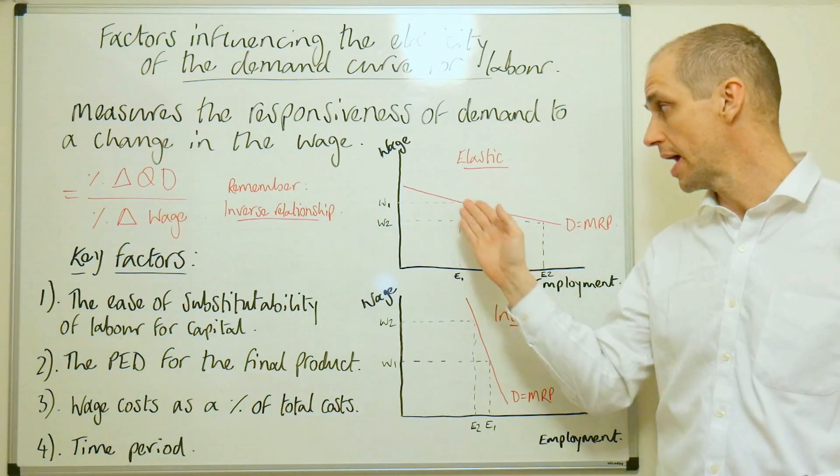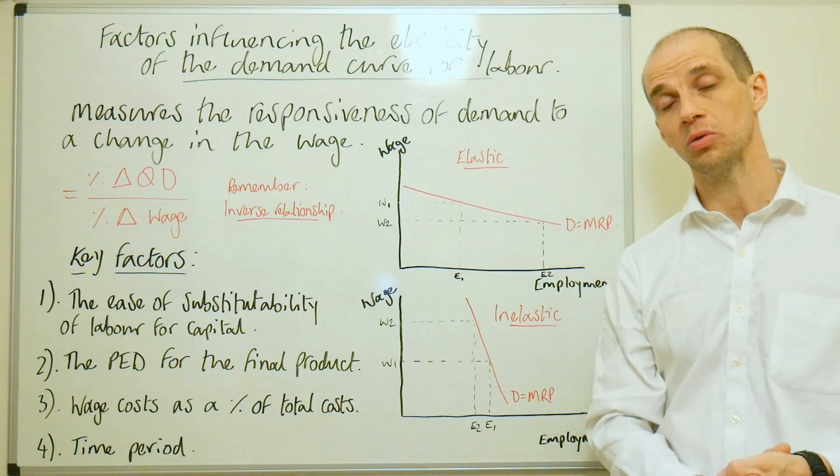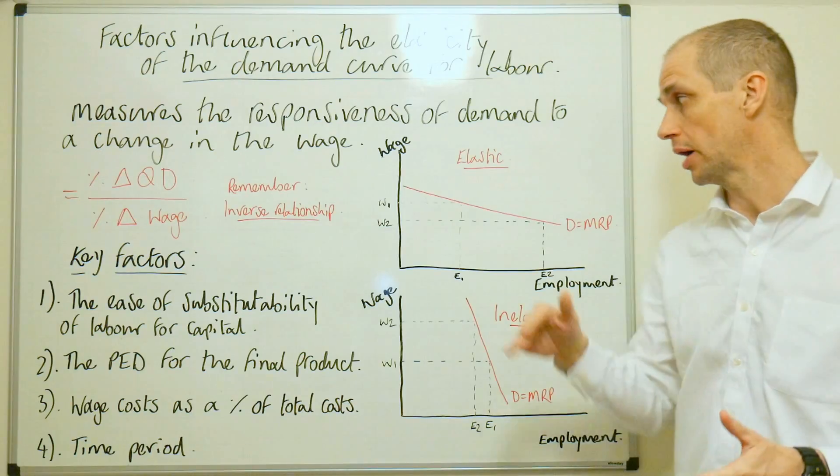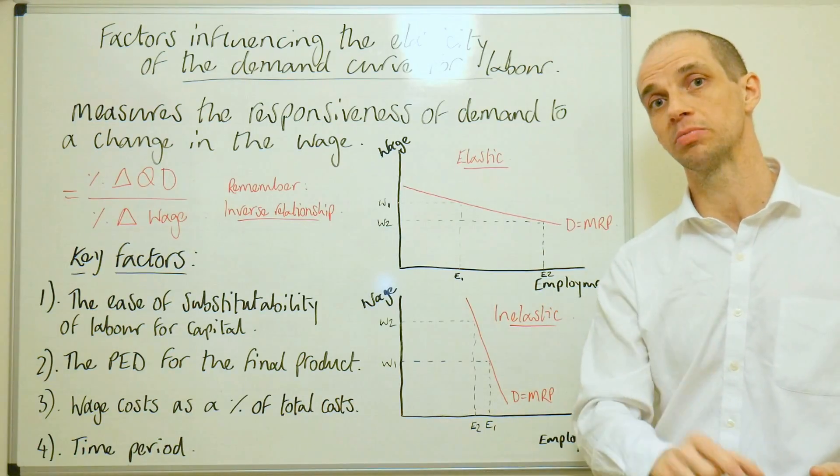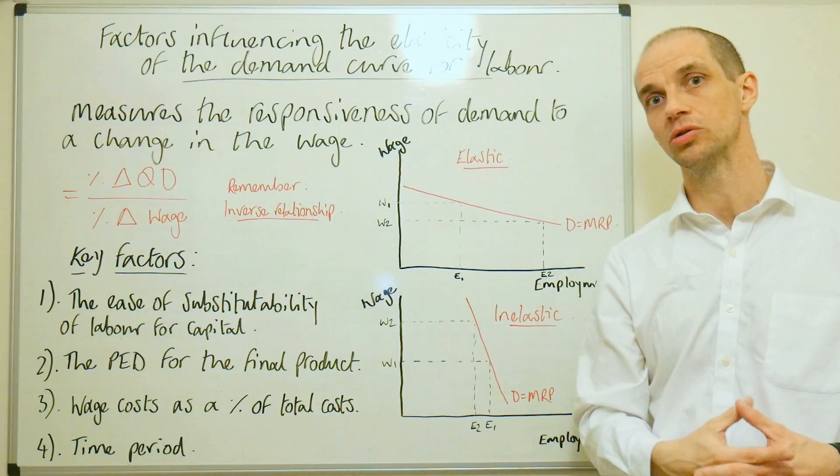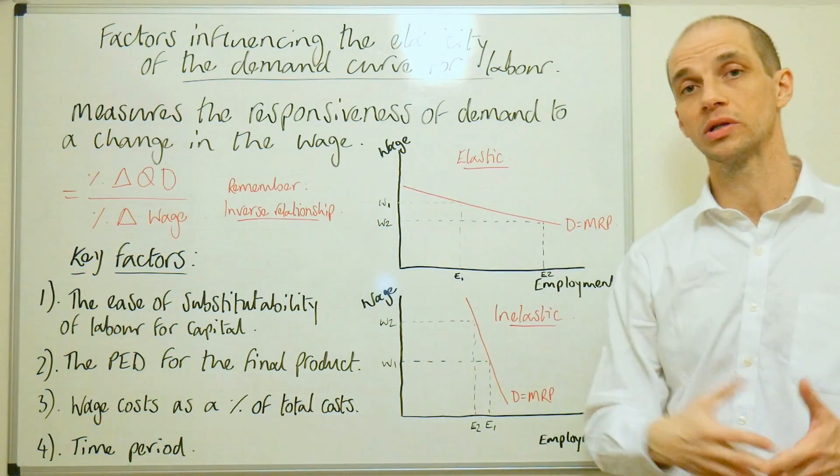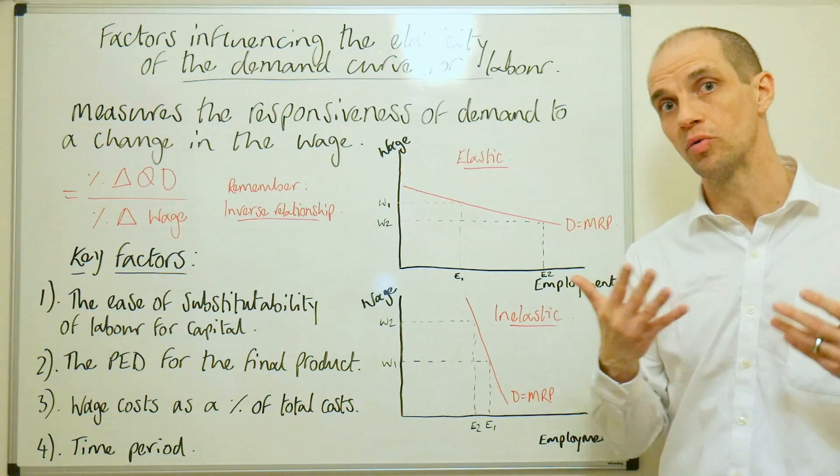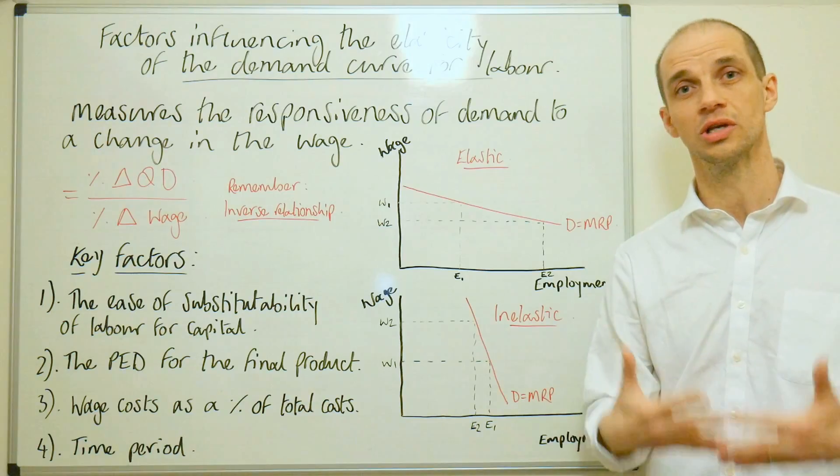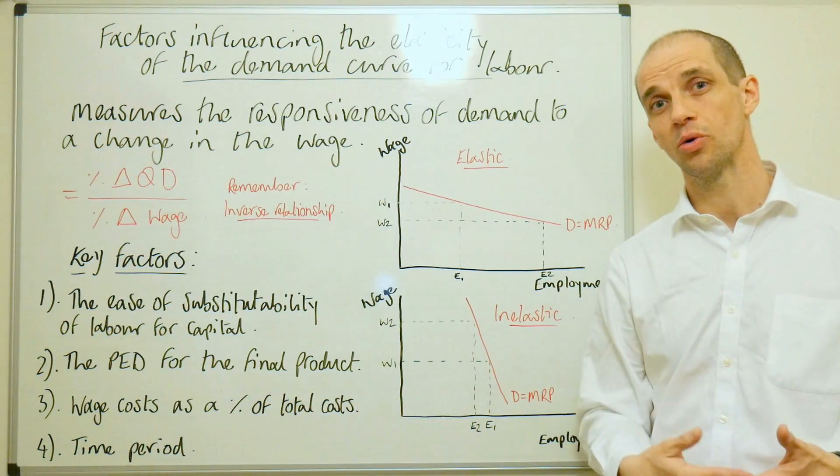...you could see that the actual degree of elasticity would change, and it would become far more wage sensitive, and the reason is because they are looking to substitute towards those capital goods. And over longer time periods, certain jobs are certainly threatened by the rise of artificial intelligence, and robotics, and so on.